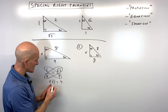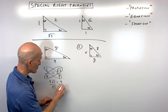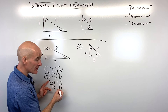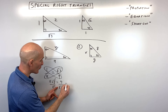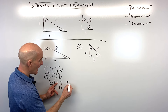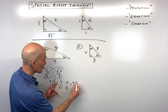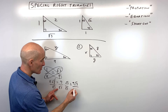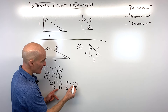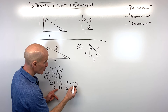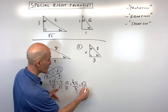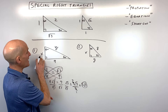We want to get x by itself, so we divide both sides by square root of 3. We don't want the square root in the denominator, so we rationalize by multiplying top and bottom by square root of 3. 9 times square root of 3 is 9 square root of 3. Square root of 3 times square root of 3 is square root of 9, which equals 3. The 9 and the 3 reduce, giving us 3 square root of 3 for x.